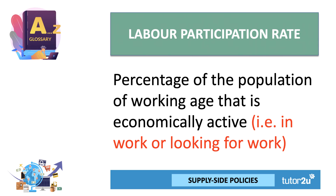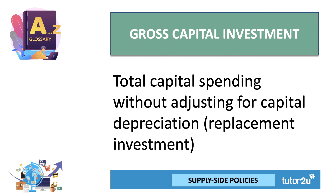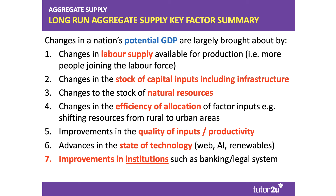One of the key aims of supply side policies is to increase the participation rate — effectively increasing the active labor supply. The third key definition is gross investment: the total spending on new capital, machinery, factories, hardware and software, without adjusting for capital depreciation. Machinery wears out and has to be replaced, and technology becomes obsolete, so a depreciation allowance is subtracted from gross investment to get net investment.